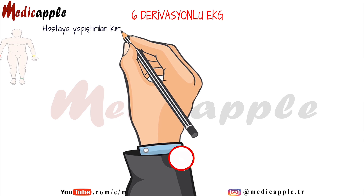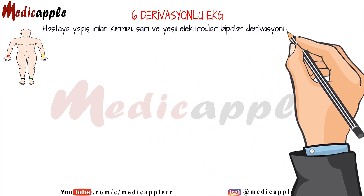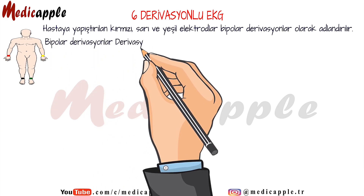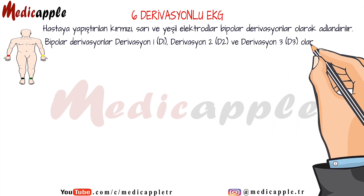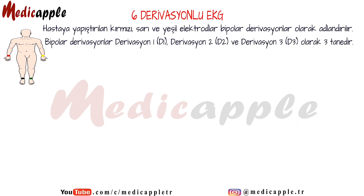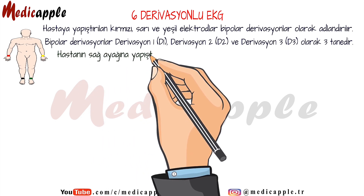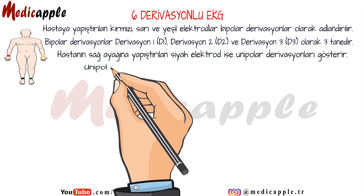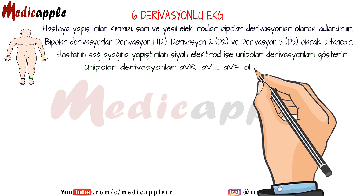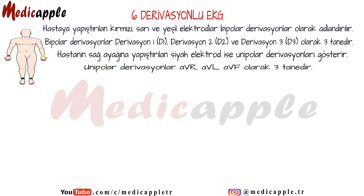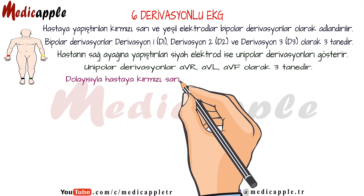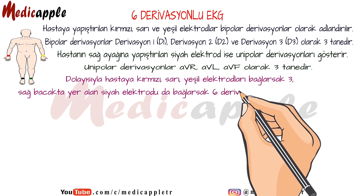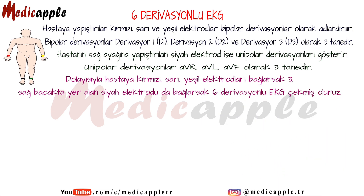The red, yellow, and green leads attached to the patient are called bipolar leads. Bipolar derivations are three: Lead 1 (D1), Lead 2 (D2), and Lead 3. The black electrode attached to the patient's right foot shows unipolar leads. Unipolar leads are three: AVR, AVL, and AVF. If we connect the red, yellow, and green electrodes to the patient, we will have a 3-lead ECG, and if we connect the black electrode on the right leg, we will have a 6-lead ECG.